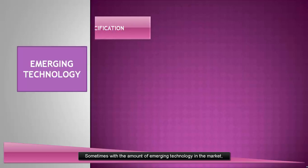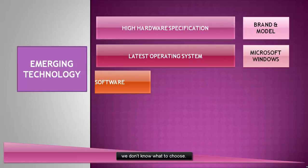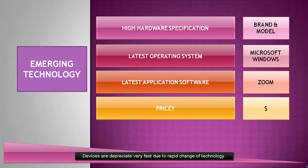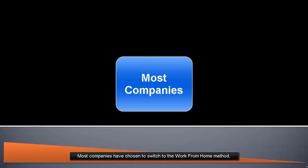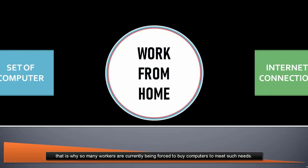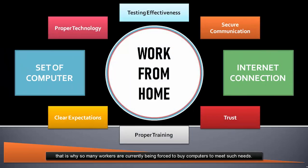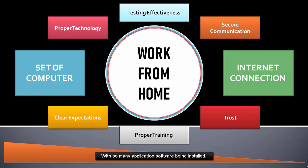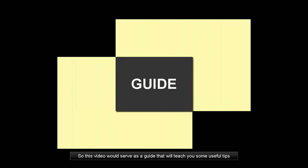Sometimes with the amount of emerging technology in the market, we don't know what to choose. Devices are depreciated very fast due to rapid change of technology. Most companies have chosen to switch to the work from home method. That is why so many workers are currently being forced to buy computers to meet such needs. With so many application software being installed, some computer users didn't notice that their computer is slowing down. So this video would serve as a guide that will teach you some useful tips for efficient flow of your computer running Microsoft Windows 10 operating system.